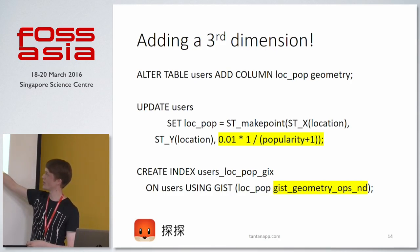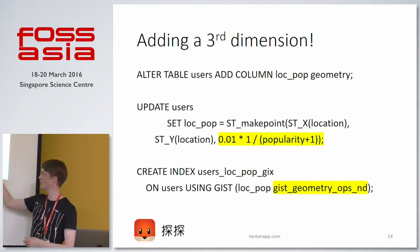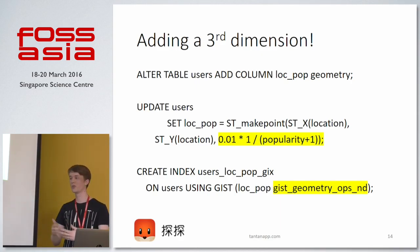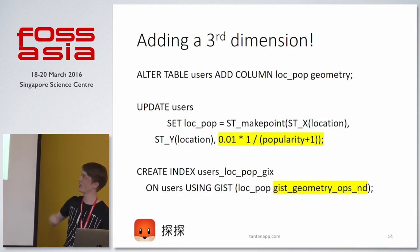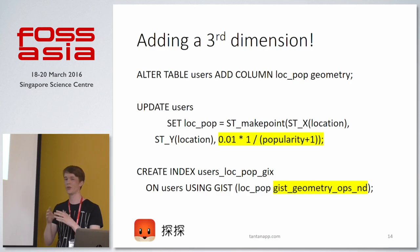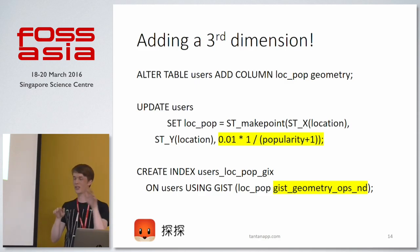You can also see that I scaled the popularity by multiplying it by 0.01 so that when we do our queries, we don't want popularity to dominate — we also want distance to play its part, so we scale it down to a reasonable size compared to x and y. I just tried different values to figure out the right number — you can try different values and see which one gives you the ordering you want.